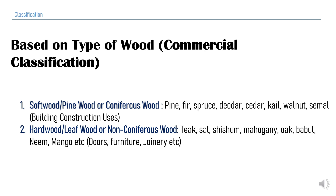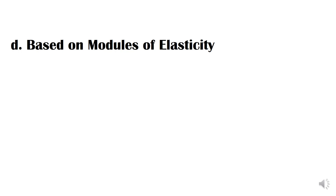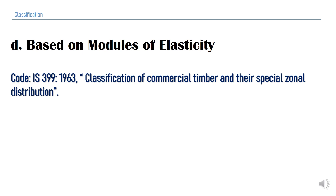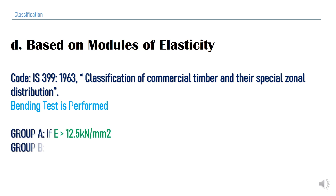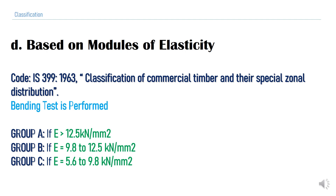The next classification is based on modulus of elasticity, as per Indian Standard code IS 399, which is the classification of commercial timber and its zonal distribution. The modulus of elasticity is determined by the bending test. Group A includes timber with modulus of elasticity greater than 12.5 kN/mm². Group B includes timber with E between 9.8 to 12.5 kN/mm². Group C includes timber with E between 5.6 and 9.8 kN/mm².